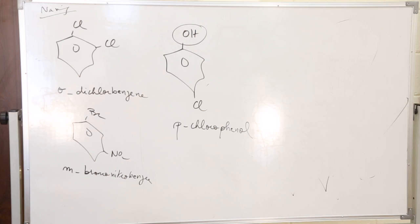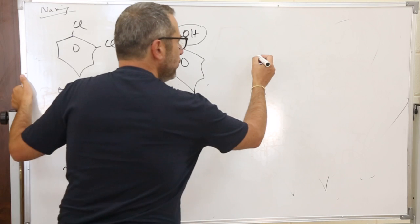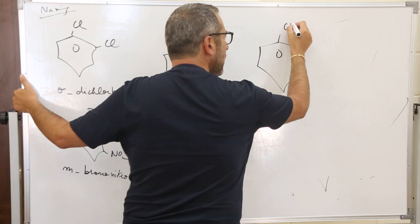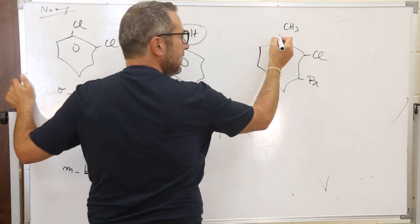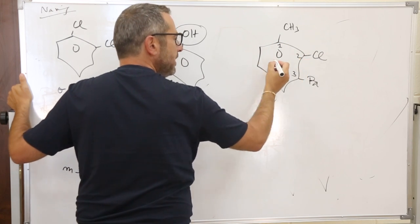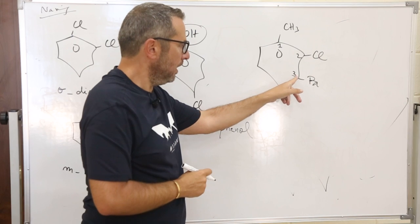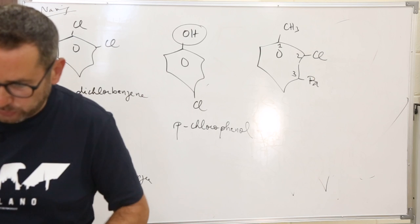If the compound contains more than two groups (three, four, etc.), we start using numbers and use the lowest combination of numbers, as you can see in your notes. If one group gives a common name, that group is numbered 1. Then choose the lowest combination of numbers for the others. Name them in alphabetical order — for example: 3-bromo-2-chlorotoluene.